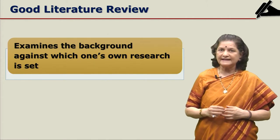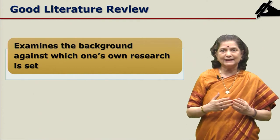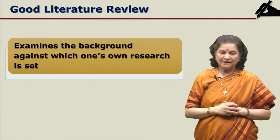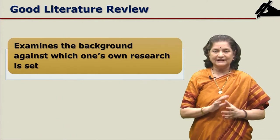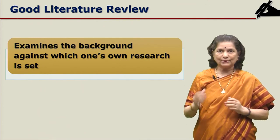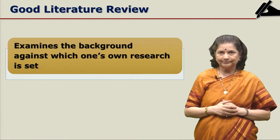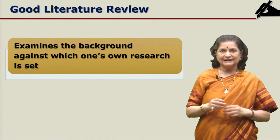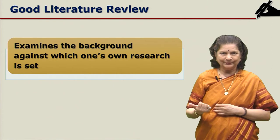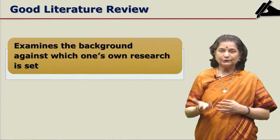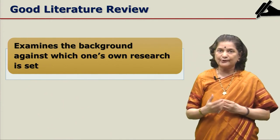A good literature review examines the background against which you are going to set your own research. When you are critically and analytically looking at the literature you have collected, you will naturally think of your own topic and how you can set it within the background or history of that topic. For example, if you have chosen open access as a topic of research, you will see all the material on open access, think about the open access movement, consider the pros and cons, and then decide your own direction or focus of research. This is the way you can set your own research within this background.